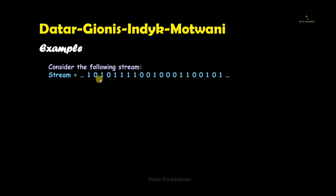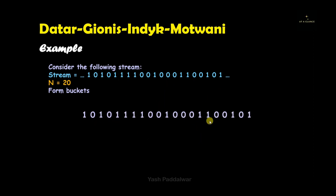Now let's take an example and solve the problem step by step. The stream contains bits — zeros and ones — and it is given that the total number of elements is 20, so n equals 20. Starting from the right, the first bucket is of length 1 because it contains only a single one, and it is valid as it is two to the power zero. Moving left, we can create a bucket of size 2 containing the bits 1, 0, 0, 1 — the rightmost element is 1, the length is 2 (two to the power one), hence valid.